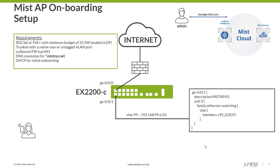Before we get into it, let's look at this obviously very simple installation we'll be using. I have a switch that basically connects to a firewall to get out to the internet. Now in order for a smooth implementation, we need to make sure a few requirements are met. First things first, there needs to be some device to provide the AP with power. In this case, I'm using an EX2200C with PoE Plus.